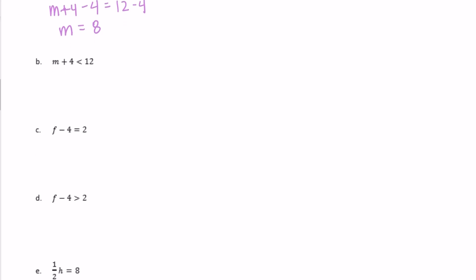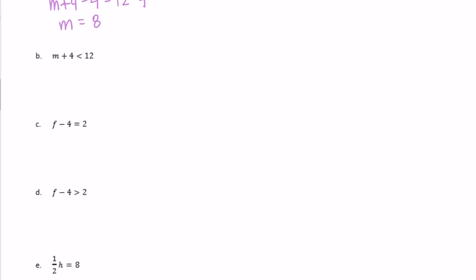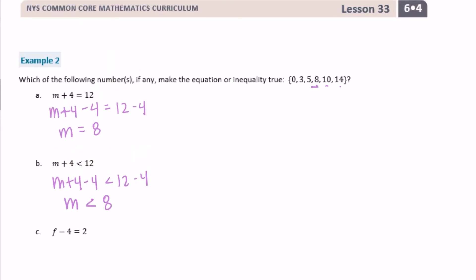Part b: m plus 4 is less than 12. The only change is the inequality symbol — less than instead of equal to. So m is less than 8. Looking for options less than 8: 0, 3, and 5 all qualify. We don't include 8 because it says less than, not less than or equal to. So 0, 3, and 5 make it true.